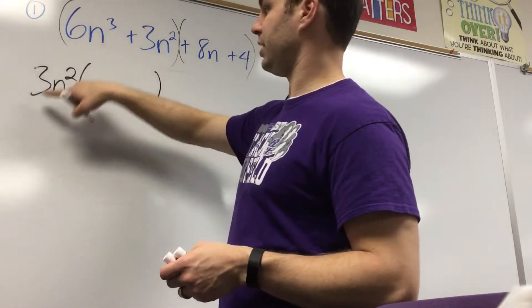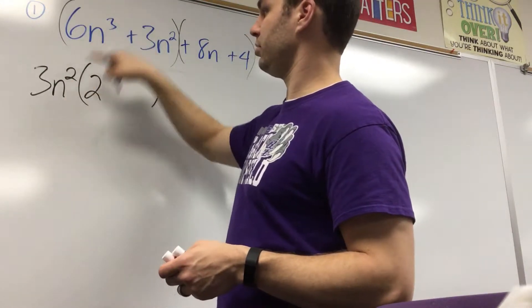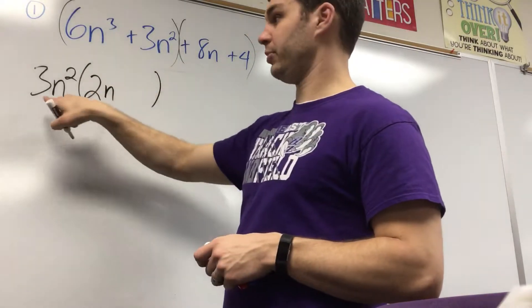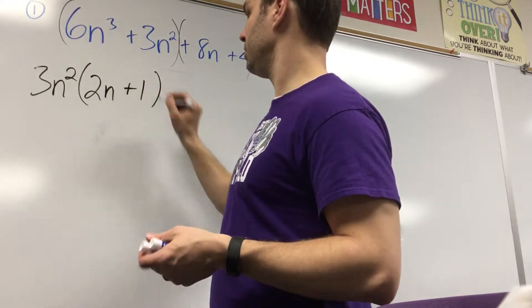So 6 divided by 3 is 2, n to the third divided by n squared is n, 3n squared divided by 3n squared is just 1, all right?